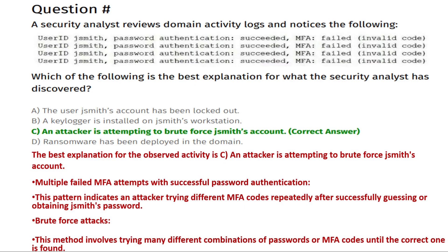Let's go to the questions. The question is: a security analyst reviews domain activity logs and notices the following — User ID Jasmith: password authentication succeeded, MFA failed, invalid code. Which of the following is the best explanation for what the security analyst has discovered?